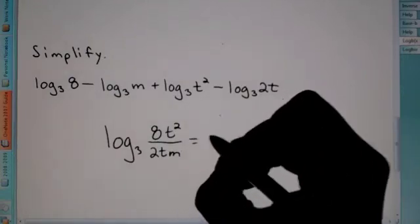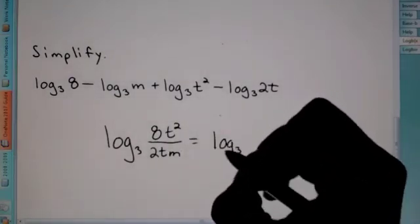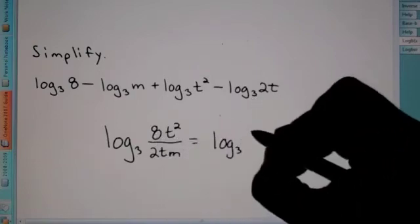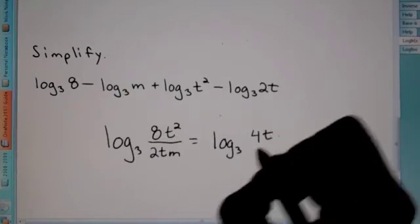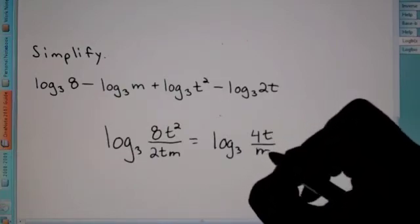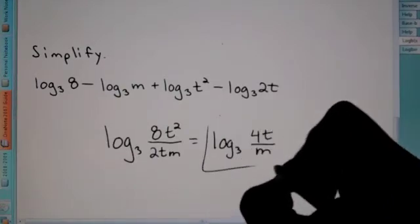Alright. And now, from here, you just see what you can reduce. So, we have log 3. 8 divided by 2 is 4. T squared on top. T on the bottom. I can get rid of one of them on top and bottom. So, all I'm left with on the bottom is m. So, this would be my final answer.